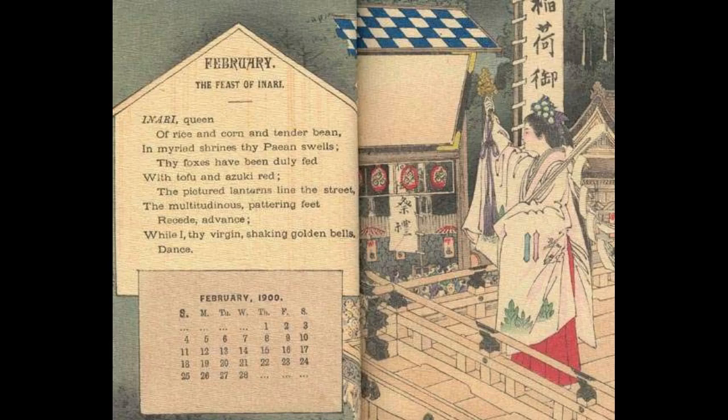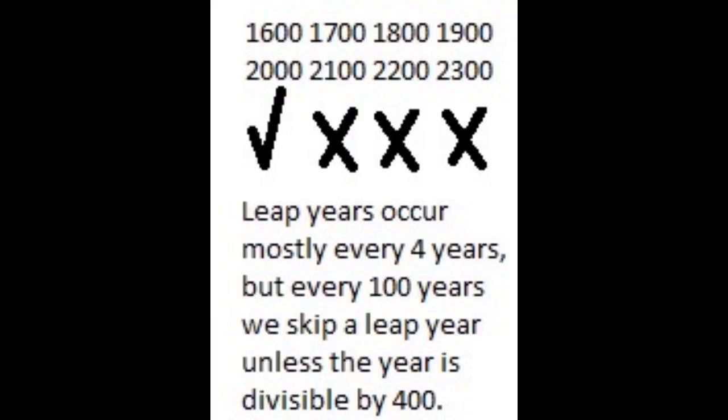Adding a leap year every four years accounts for 0.25 days. However, the actual difference between a solar year and a calendar year is 0.2422 days, slightly less than the added 0.25 days. Over centuries, this slight difference accumulates, causing the calendar to drift out of sync with the seasons. To address this, the following rule is used.